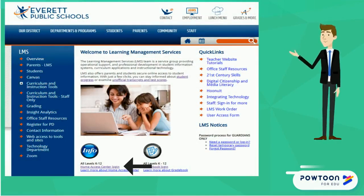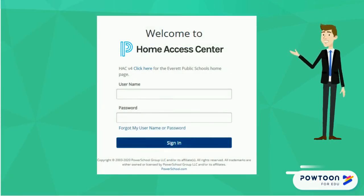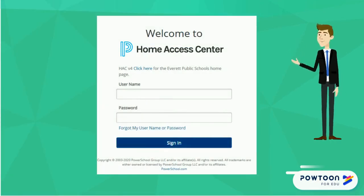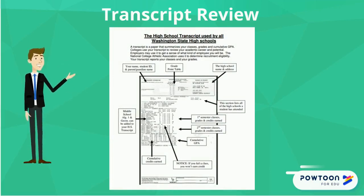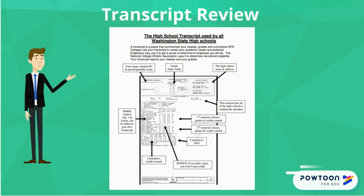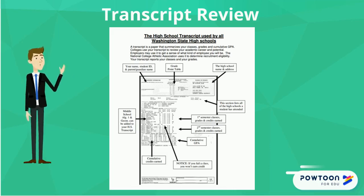You will be taken to a page that looks like this. Log in with your student ID number and district password. From this point, you will be on the main page. Select Grades and then the TAD transcript. Your transcript is an official record of your high school accomplishments so far. It is organized by semester and includes grades for each class, your semester GPA, and cumulative GPA listed after your classes.